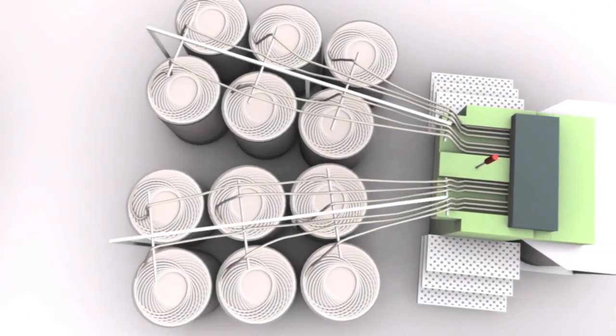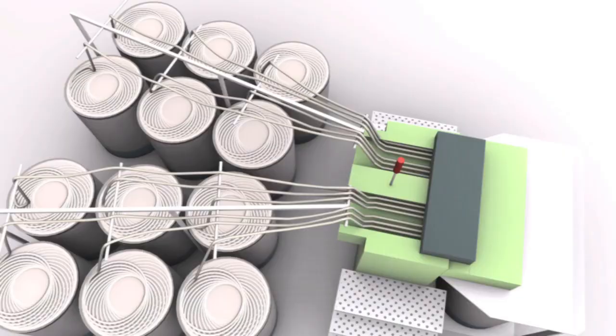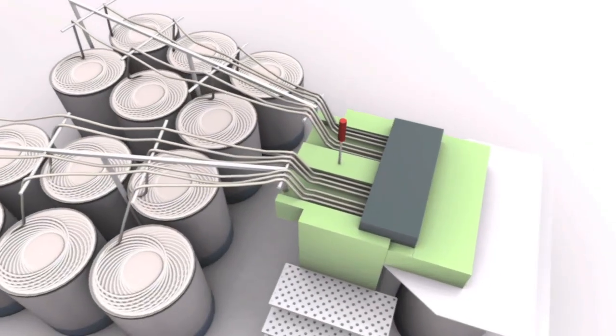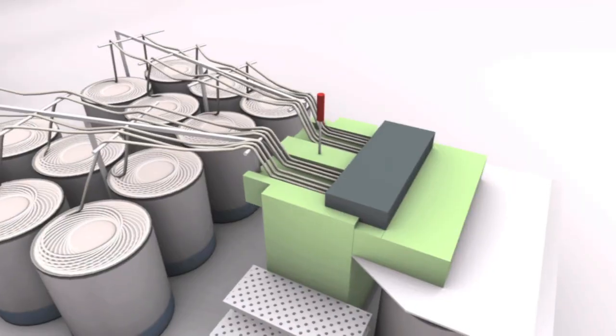To compensate irregularities of the card sliver, several slivers are combined on the draw frame and drawn at the same time.